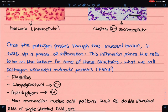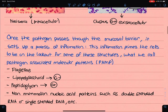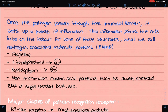Once the pathogen passes through the mucosal membrane, it will set up a process of inflammation. This inflammation primes the cell to be on the lookout for pathogen-associated molecular patterns, or PAMPs. The cell will be on the lookout for things that mammalian cells don't have: flagellae, lipopolysaccharides in gram-negative bacteria, peptidoglycan in gram-positive bacteria, and also double-stranded RNA and single-stranded DNA.